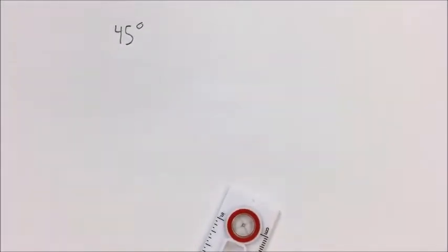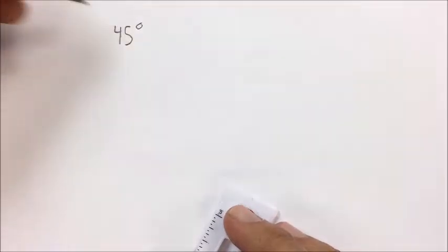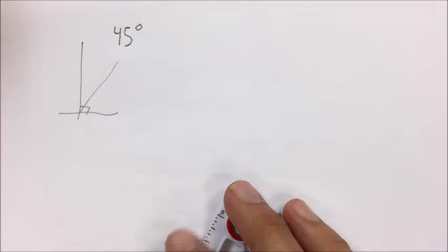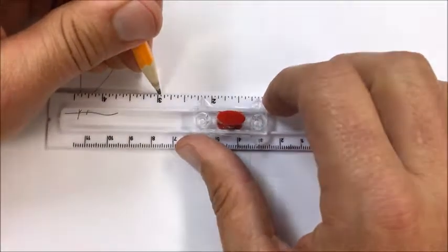I'm going to construct a 45-degree angle. In order to do that, I'm going to make a 90-degree angle and then bisect it, cut it in half. So first off, I'll